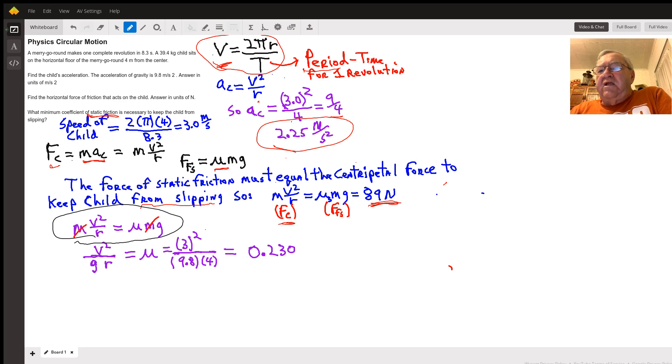So I can just simply divide by little g to solve for μ. So my speed squared divided by little g, 9.8 times my radius 4, will be equal to 0.23.